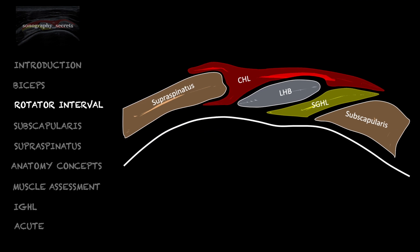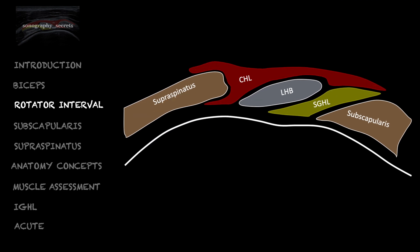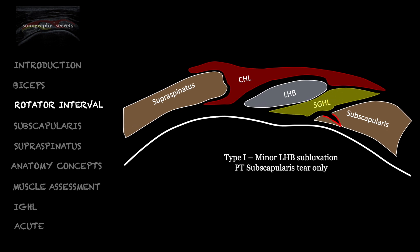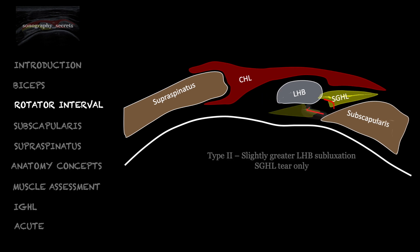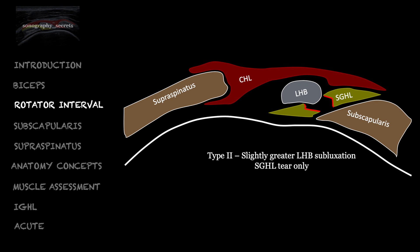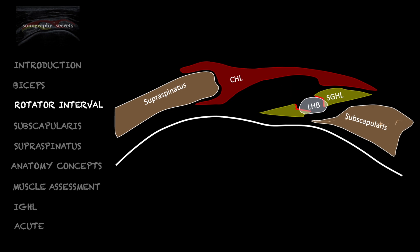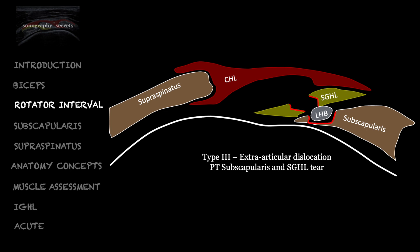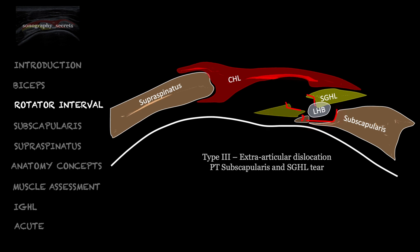The rotator interval is implicated in biceps instability or subluxation. The modified Habermeyer system incorporates six types of biceps instability. Type one is where there is a partial thickness tear of subscap only, producing mild displacement of the biceps. Type two is where there is mild displacement of the biceps due to a superior glenohumeral ligament tear. Type three is where there is an extra-articular dislocation due to a partial thickness tear of subscap and also a tear of the SGHL.